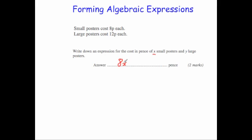That means 8p times how many posters you want to buy. For the large posters, we've got y posters at 12p each, so it would be 12 times y. And it wants the total cost so it's going to be 8x plus 12y. That means to find the total cost you would do 8 times the number of small posters add 12 times the number of large posters. And that would give you the price in pence altogether.